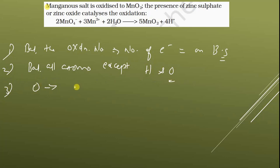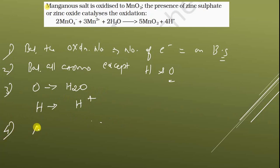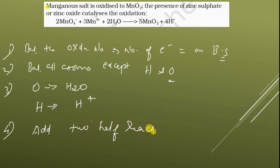The third point: oxygen can be balanced by adding H2O, and hydrogen can be balanced by adding H+ ions. The final step is to add the two half reactions — the oxidation half reaction plus the reduction half reaction.